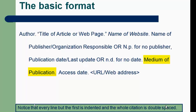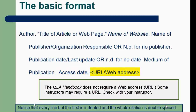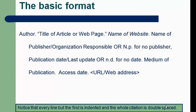After the date comes the medium of publication, which because it's a web page will always be 'Web,' period. Then the access date in MLA format: day, then month, then year, period. And finally the URL or web address for the specific page you are citing, not the larger website it's a part of.